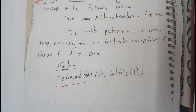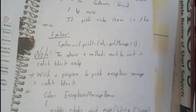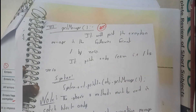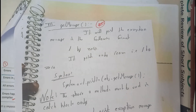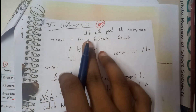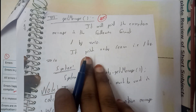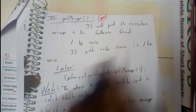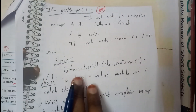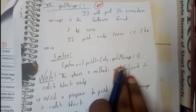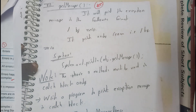Now let us continue with the third type, that is getMessage. It is clear that getMessage will give you the appropriate message. It will print the message in the format: divide by zero - it prints only the reason. The syntax will be: System.out.println(object.getMessage()).